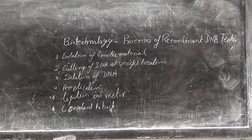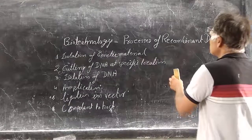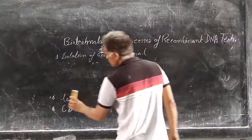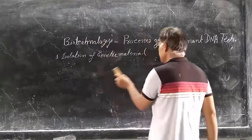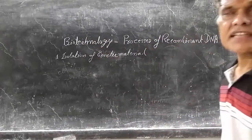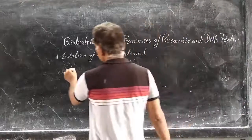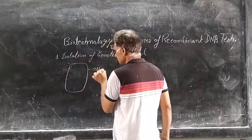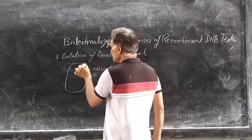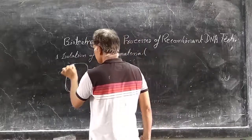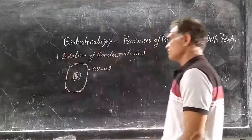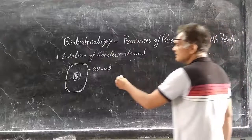These are the different steps in the process of recombinant DNA. First is isolation of genetic material. If we look at genetic material present inside the cell — suppose this is the cell — this is the cell wall, inside is the cell membrane, then the nucleus, and inside that the genetic material.